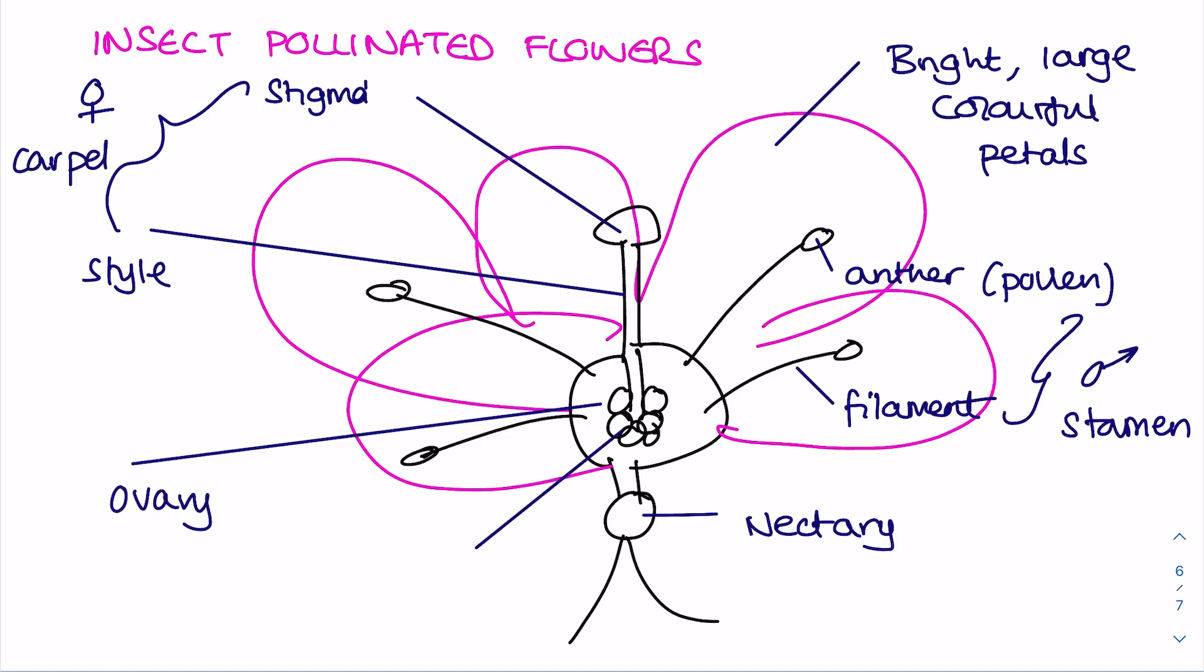Inside the ovary you find the ovules and the eggs. Just remember for me that when that pollen lands on this stigma and grows a pollen tube down into the ovary, the pollen will enter via what's known as a micropyle.